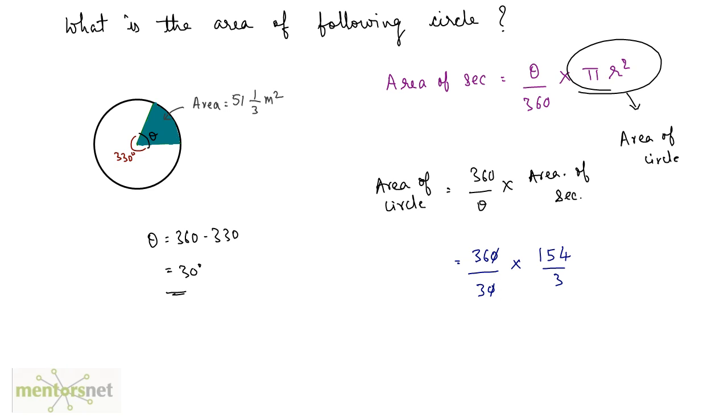So this 0 gets cancelled out. 3 times 12 is 36 and 3 times 4 is 12. So 154 times 4 and that is equal to 616 square meter. And that's the area of a circle.